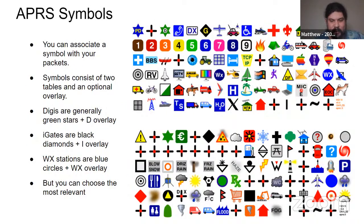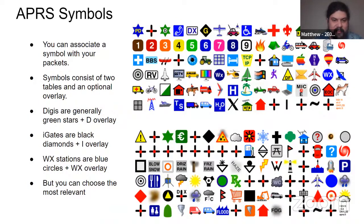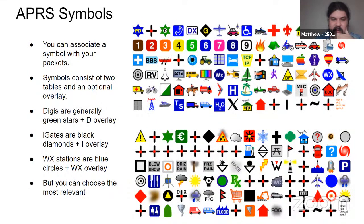Which brings us to APRS symbols. When you're transmitting APRS, you can associate a symbol with your station. There are two tables of symbols — primary and secondary — and you can also specify an overlay. When configuring your radio it will usually ask which table and overlay. There are some loose standards: a digipeater is generally a green star with a 'D' overlay, an iGate is generally a black diamond with an 'I' overlay (or 'R' if receive-only), and weather stations are generally a blue circle with 'WX' overlaid. But you can choose whatever's most suitable.